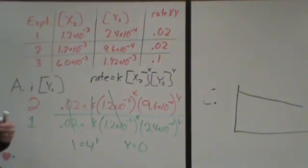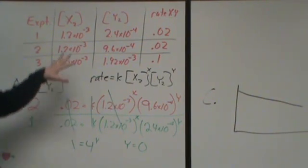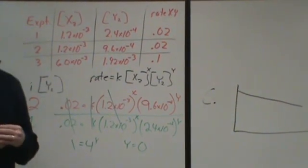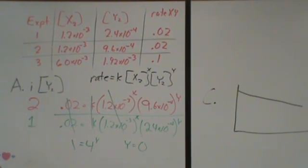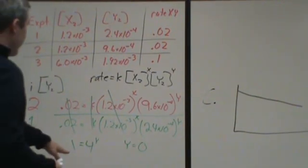Now, if you're someone who can do that in your head, you can look at this chart and infer that information. What you would want to do is you would want to say for your justification, when I compare experiments 1 and 2, I see that y quadruples, x is constant, and the rate doesn't change.